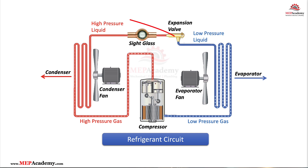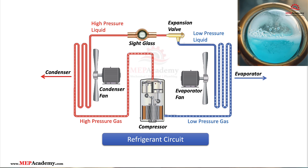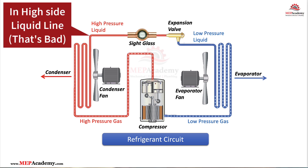When high-pressure liquid refrigerant exits the metering device and enters the evaporator at a much lower pressure, it can't stay in liquid form. The drop in pressure causes part of the refrigerant to boil instantly, absorbing heat in the process — that's flash gas. But flash gas can also form where it shouldn't: in the liquid line, if the refrigerant pressure drops too early. That's a red flag.